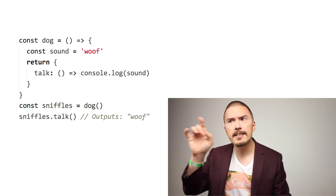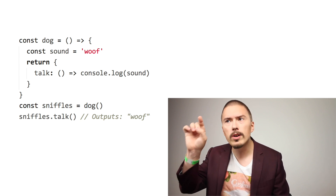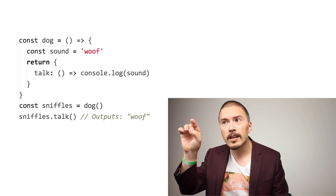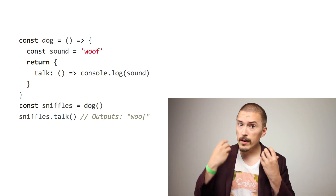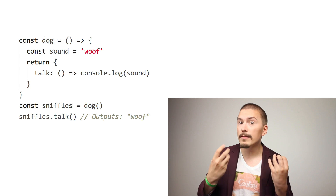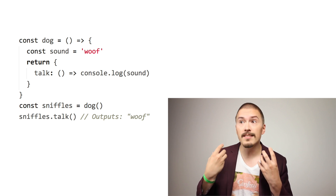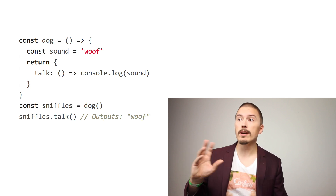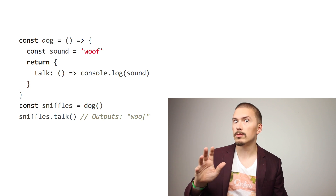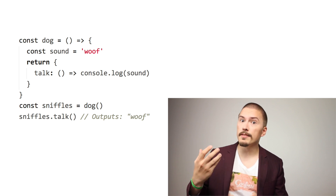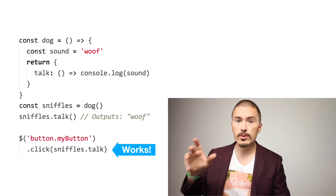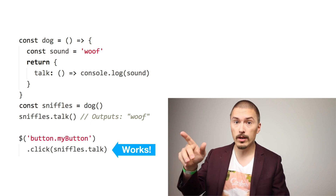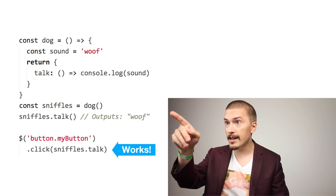A bonus feature here is that the code outside of the dog doesn't have access to the sound variable. So the sound variable is actually properly private to the dog, which it isn't in the class. And notice here that we are not using the this keyword at all. And because of that the reference to the sound variable will always be correct, even when we use it in the way that broke in the class example like this.